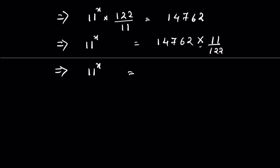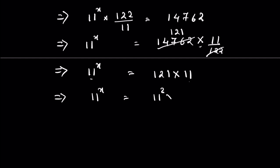11 raised to the power x equals: when you divide 14762 by 122 you get 121, so 121 times 11. Now we have a base and an exponent, so we can equate the bases to compare the exponents. 11 raised to the power x equals 121, which can be written as 11 raised to the power 2, times 11.